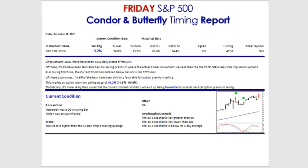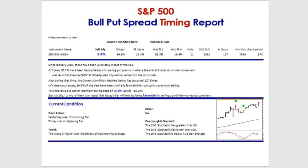For those who like to sell put options a standard deviation away, maybe 30 days out — the bull put spread report. Over 4,500 daily S&P closes, 83.2% of the time, those bars were favorable for selling put premium a standard deviation away, 30 calendar days out, because 83.2% of the time the downside movement was less than what the option prices implied. That's even after factoring in the CBOE skew, where out-of-the-money puts have a higher implied volatility than out-of-the-money calls. That's our benchmark: 83.2% of the time.